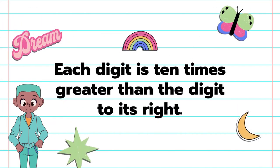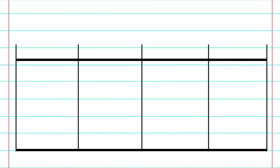With place value, each digit is 10 times greater than the digit to its right. So you're saying, what does that mean? In order for us to dig deeper and really understand, let's put together a place value chart.